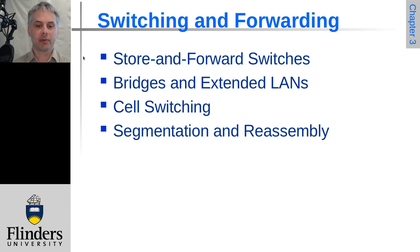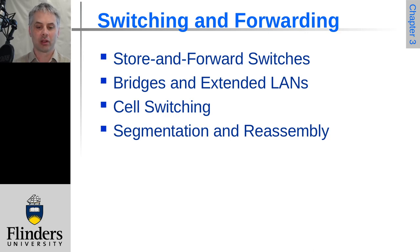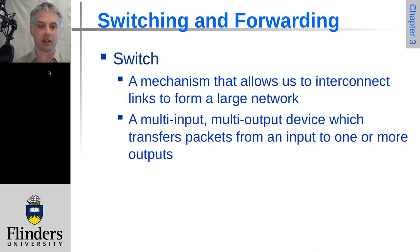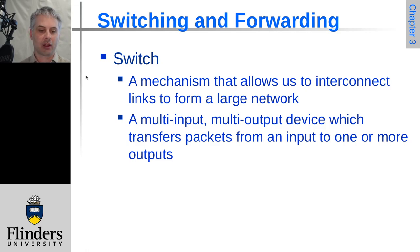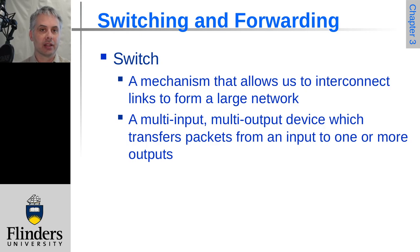Let's start with switching and forwarding. We can have switches that will simply switch and forward. We can extend LANs with bridges, do cell switching for particular network types. And depending on how packets move through, we may actually need to fragment them — segment them into smaller pieces and then reassemble. A switch itself is really a mechanism that lets us connect lots of individual links to form a large network. It has multiple input and output ports, and devices or other networks can connect in on any one port. The traffic from that can get replicated onto the correct other ports that have the node with the required destination address.